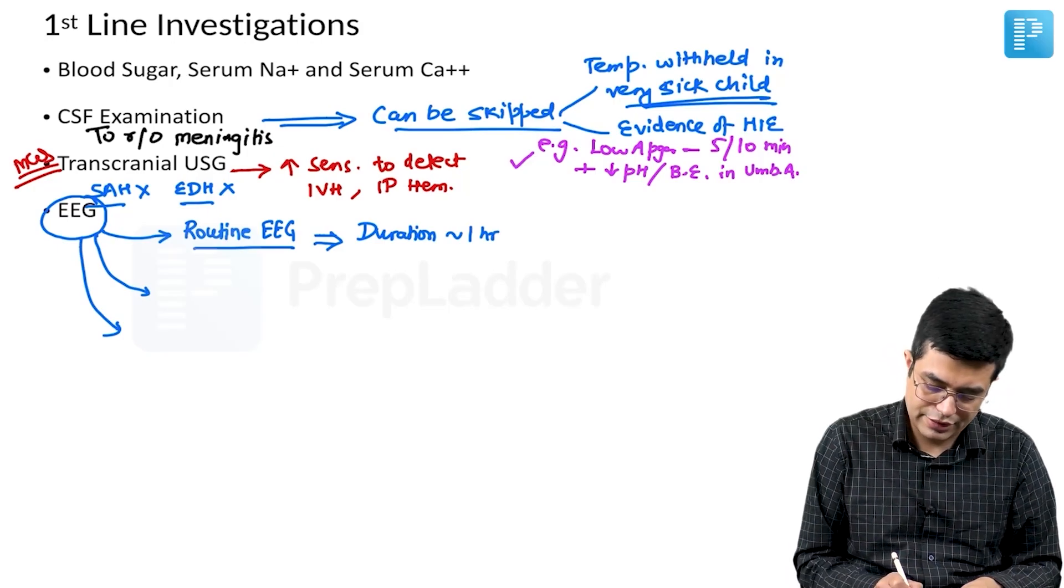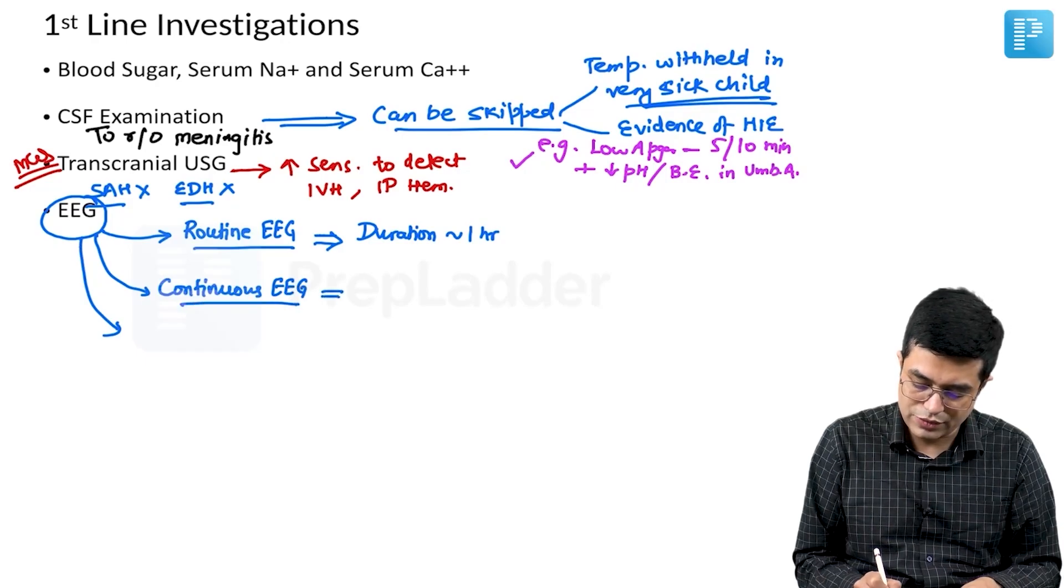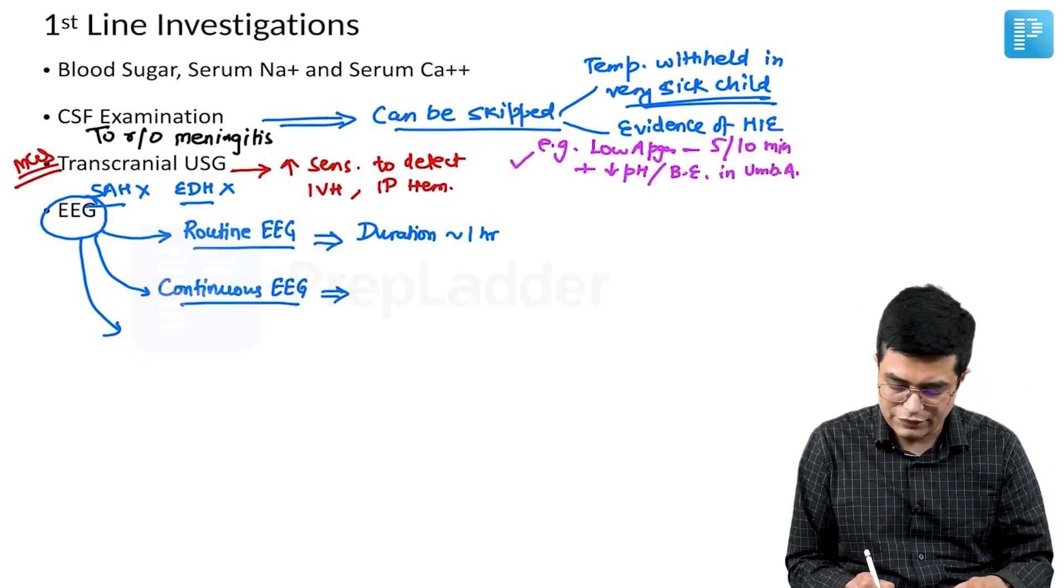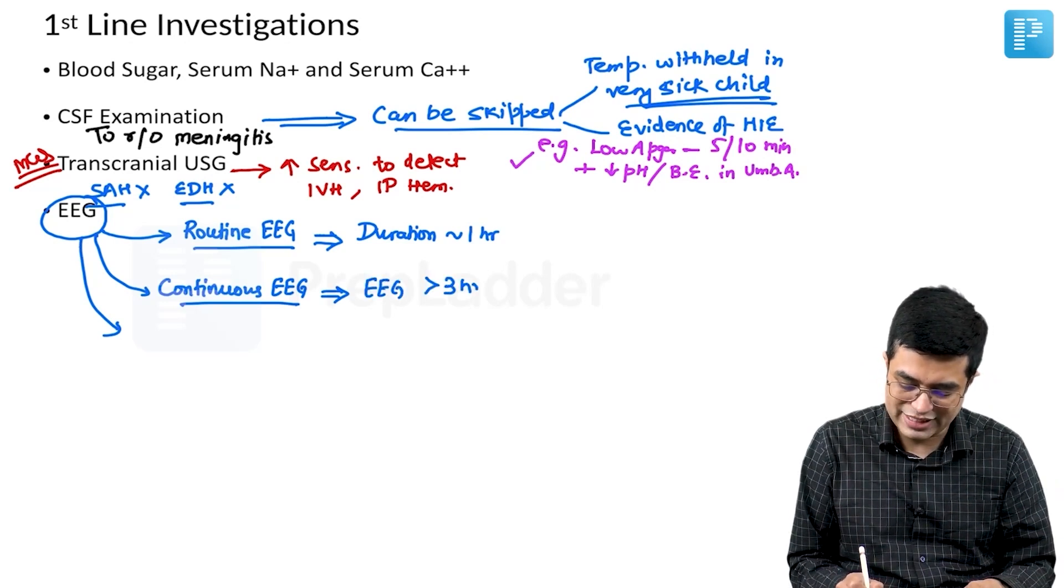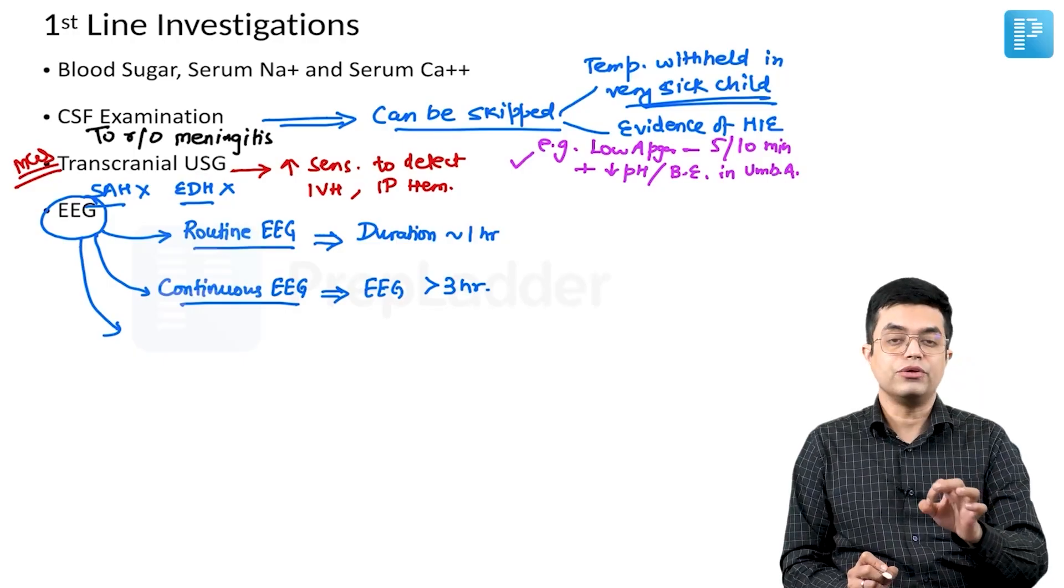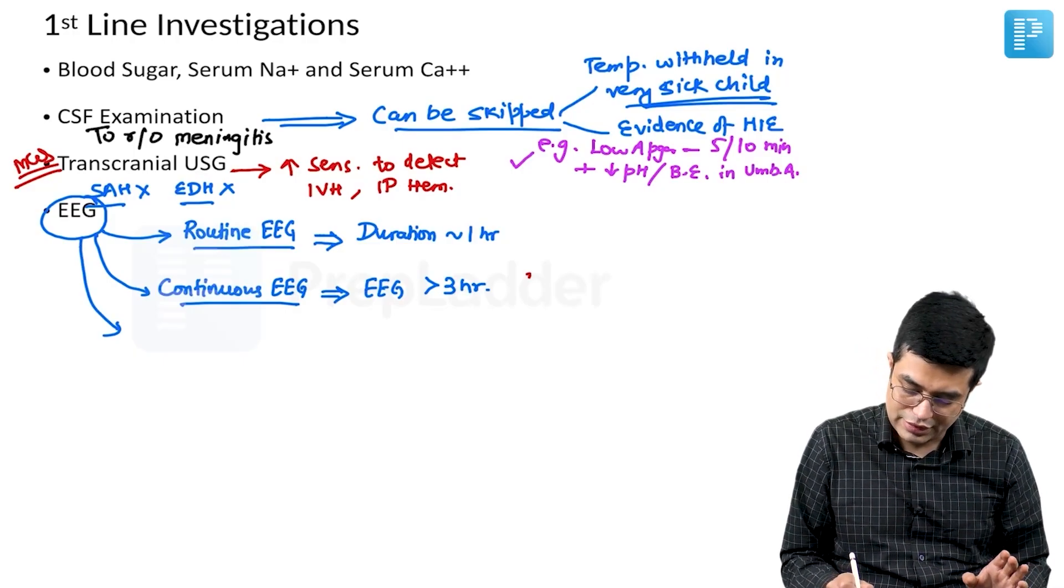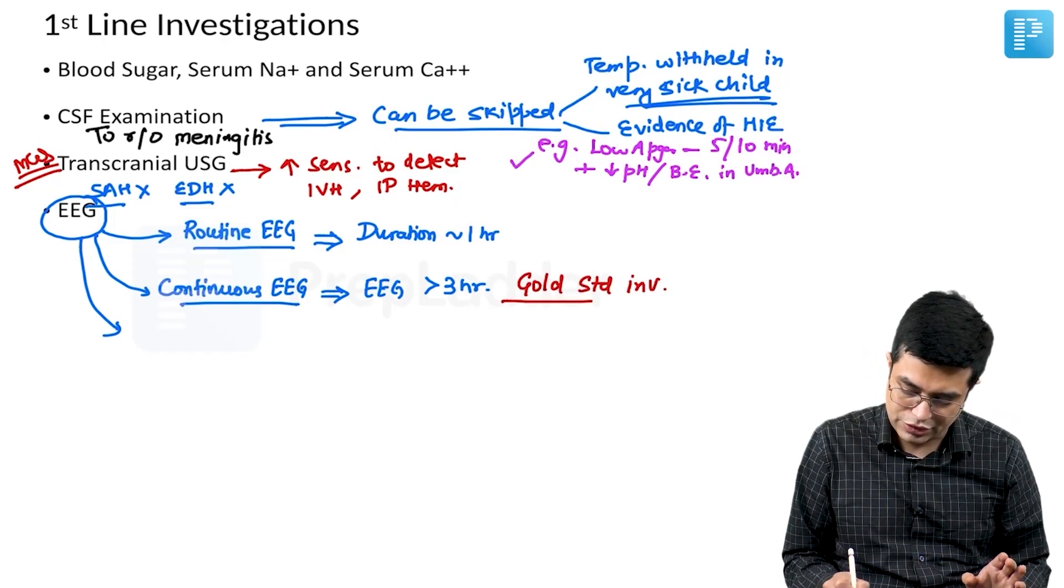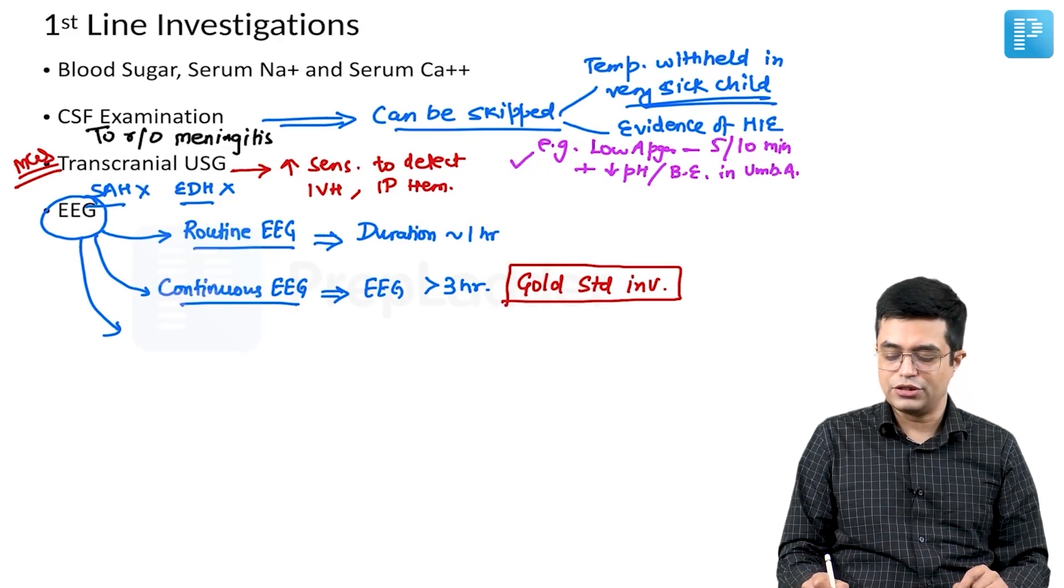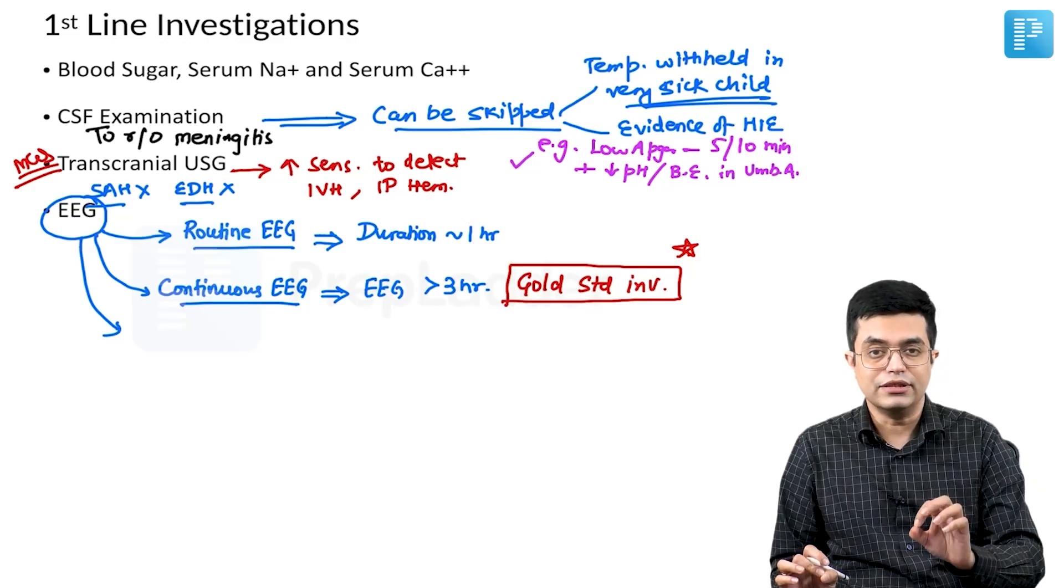The second type of EEG is called as continuous EEG. Ideally speaking, continuous EEG should be 24 hours, but in general we say when the EEG recording is consecutively for more than 3 hours, we say it is continuous EEG. Ideally, 24 hour EEG recording should be done. Continuous EEG is considered to be the gold standard investigation in patients of neonatal seizure. Potential MCQ point, which is a gold standard investigation - continuous EEG.